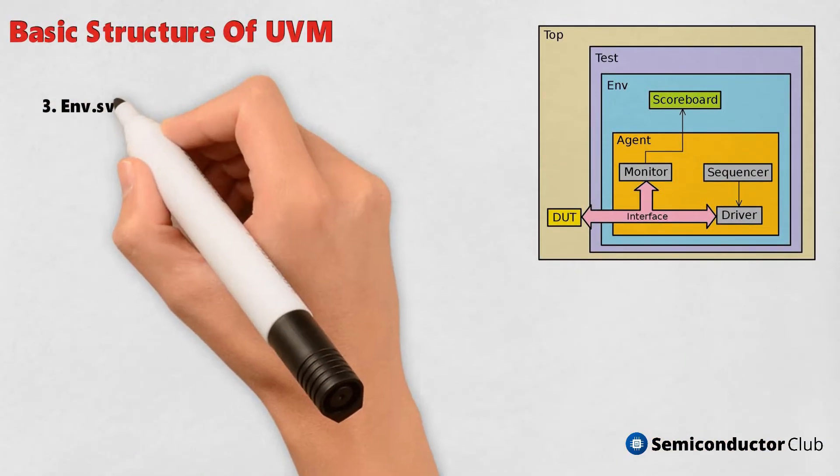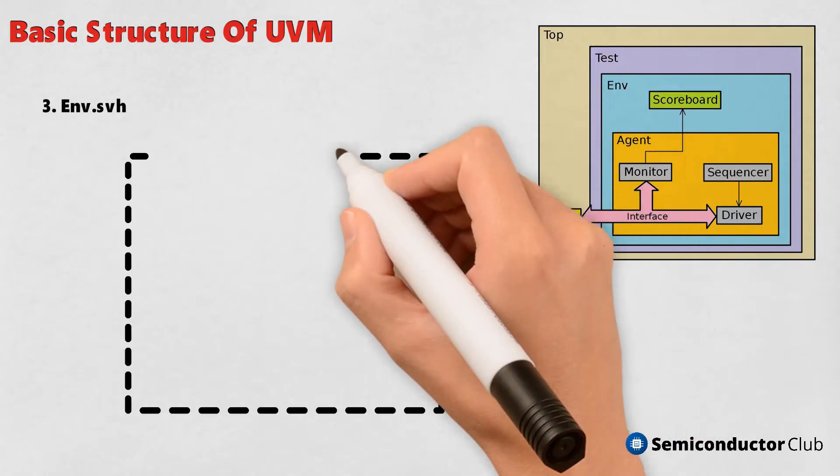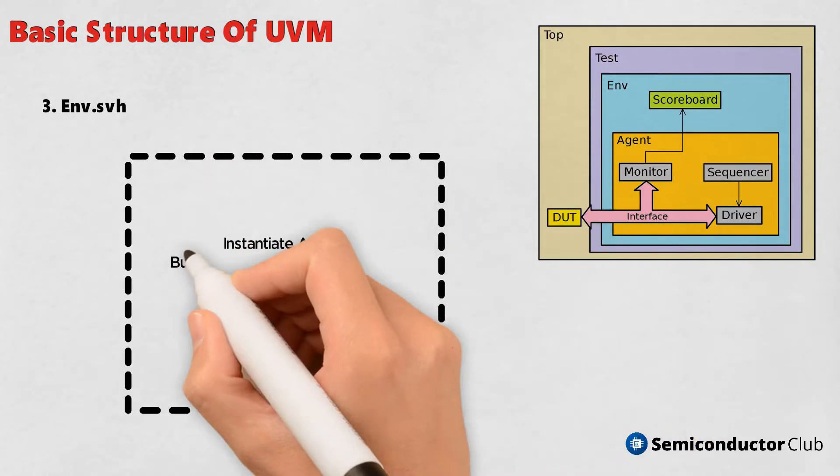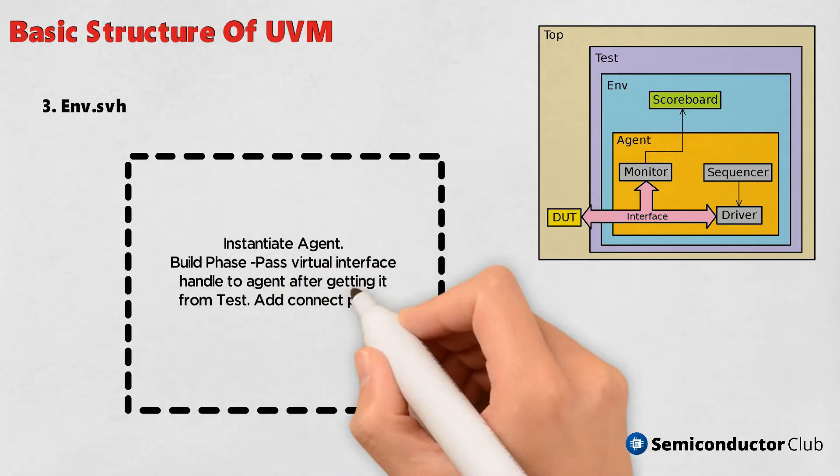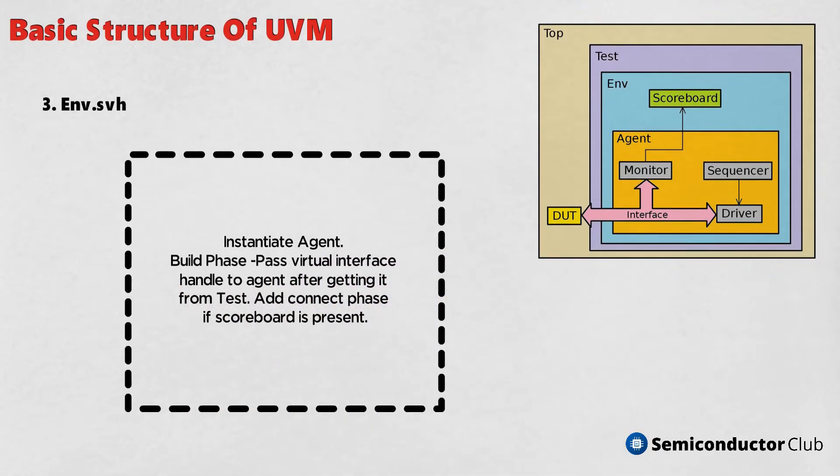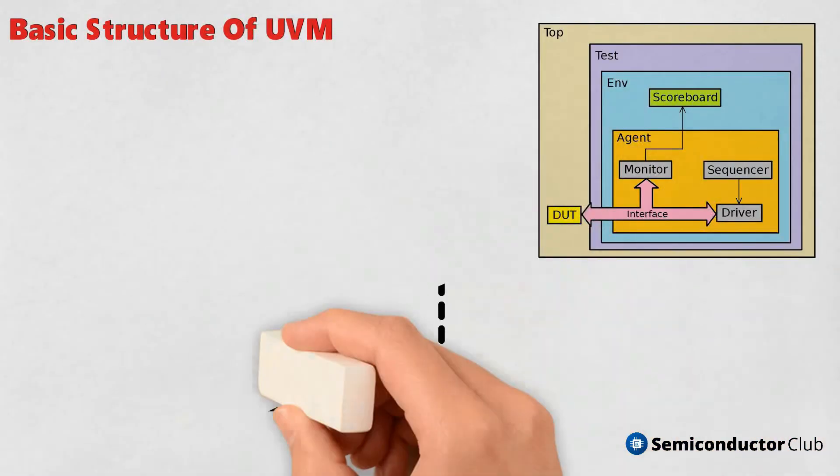3. Env.svh - Instantiate agent. Build phase: pass virtual interface handle to agent after getting it from test. Add connect phase if scoreboard is present.